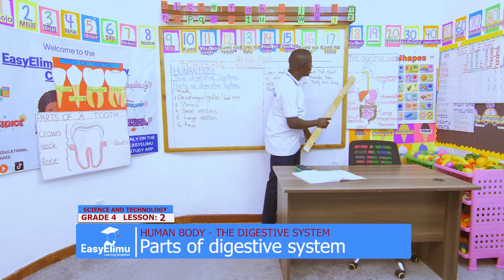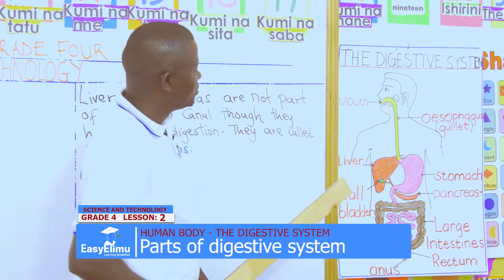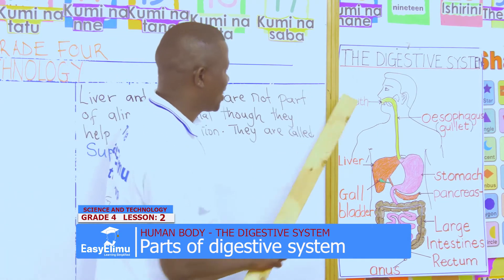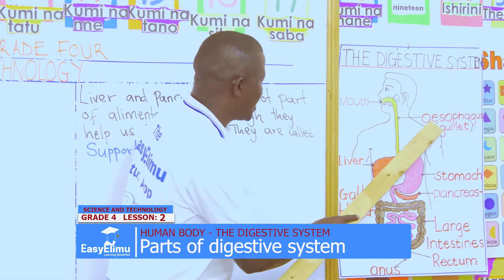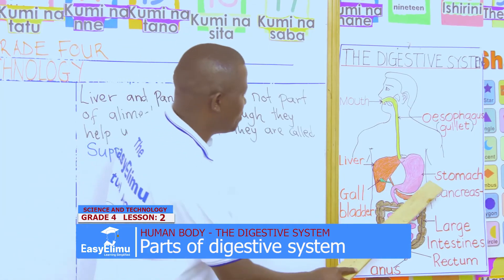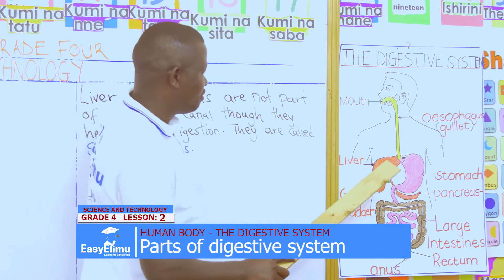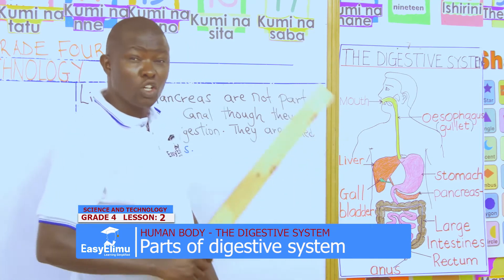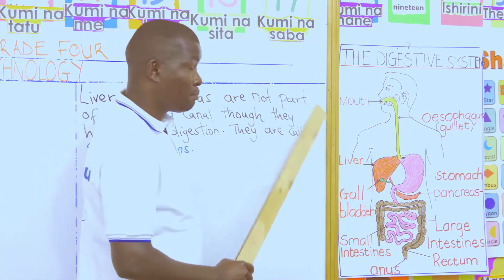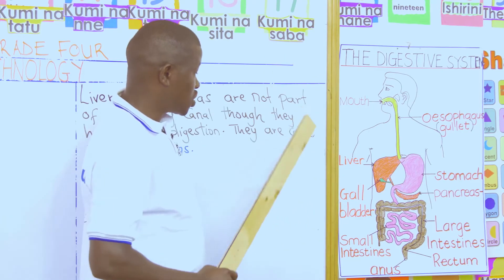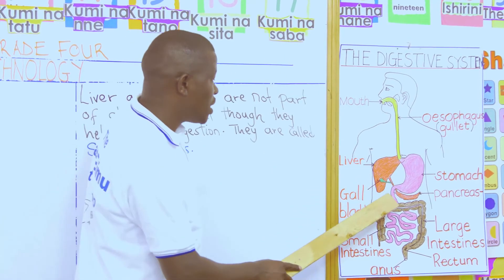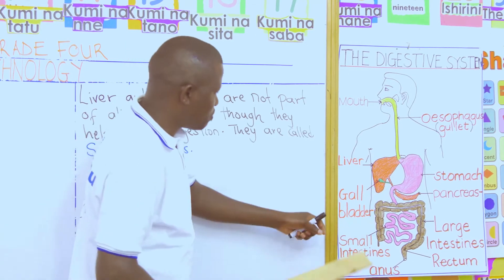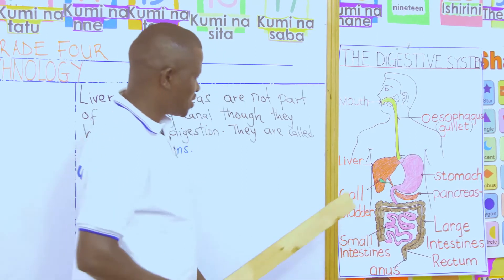So let us observe the parts of the digestive system or the alimentary canal. We have the mouth, we have the oesophagus, we have the stomach. The liver and pancreas are not part of the digestive system, but we call them the support organs because they support in the digestion of food. Then we have the upper part of the small intestine — we have called it the duodenum. This part from here to here is called the duodenum.